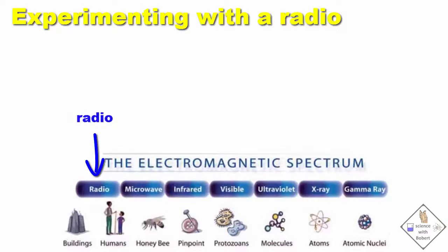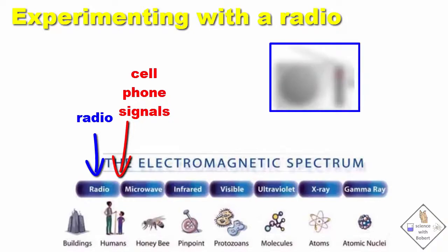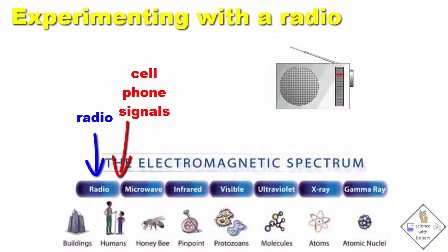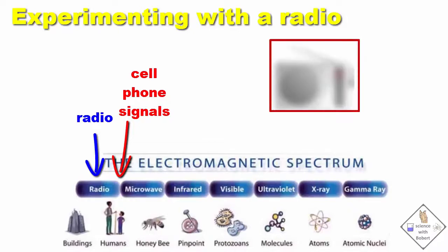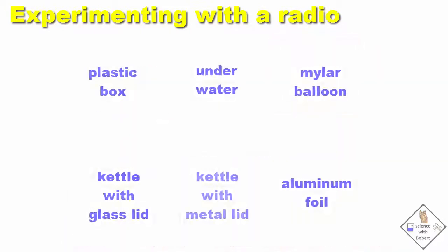Recall, radio waves are very close to cell phone signals on the electromagnetic spectrum. That gives me an idea for another experiment. If we turn on a radio and surround it with a radio wave blocking material, the sound from the radio has to stop. And if the material cannot block radio waves, the sound from the radio has to continue. Here are a bunch of experiments. Which ones do you think will block radio waves? Let's try each material and see which ones work.